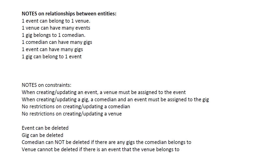Everything will be stored in a database, so we will have to take care of the relationships between entities. One event belongs to one venue, but one venue can have many events. Similarly, one gig belongs to just one comedian, but a comedian can have many gigs. One event can also feature many gigs, but a single gig can belong to only one event. These relationships are important because this is how we will set up our models in order to have Entity Framework utilize these relationships and create them for us in the database.